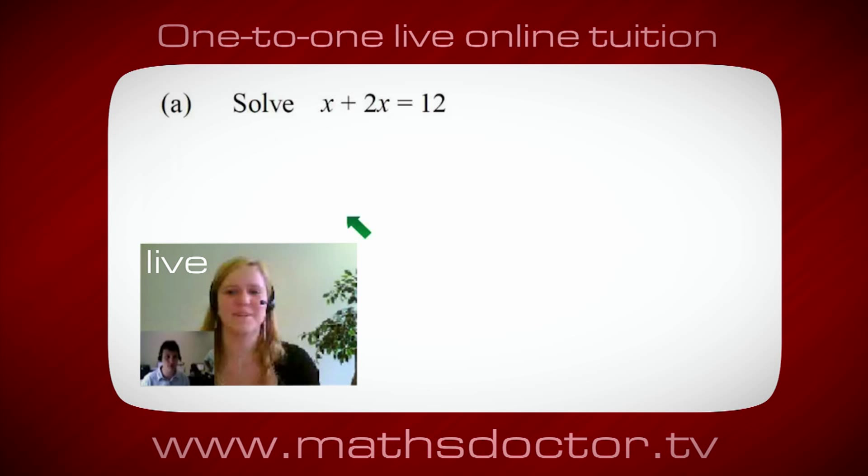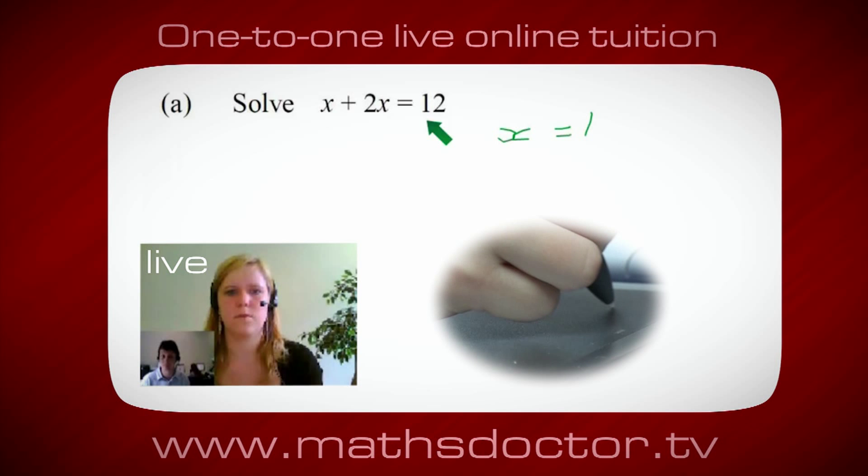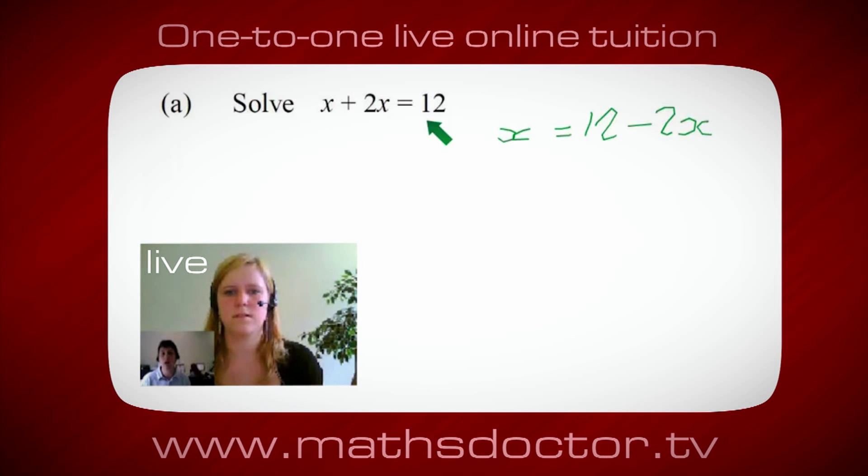OK Marie, so let's have a look at this one. So solve x plus 2x equals 12. So what do you think you do first? OK, well I want x on its own so I would put x equals 12 minus 2x.